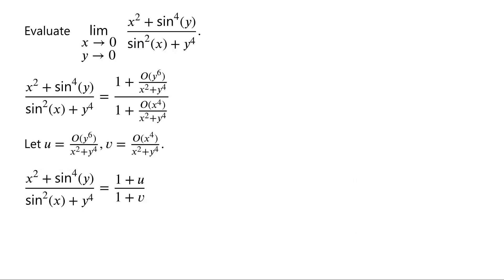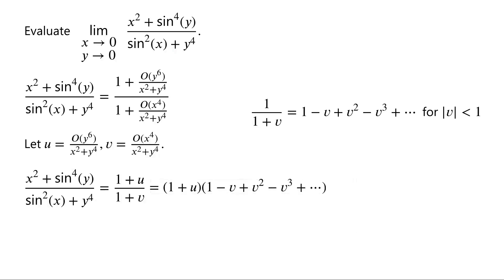Then the function can be written as 1 plus u over 1 plus v. We know that 1 over 1 plus v can be written as a geometric series: 1 minus v plus v squared minus v cubed and so on. The geometric series converges when the modulus of v is less than 1. So 1 plus u over 1 plus v can be written as 1 plus u, times 1 minus v plus v squared minus v cubed and so on, which is equal to 1 plus u minus v plus big O of uv plus big O of v squared.